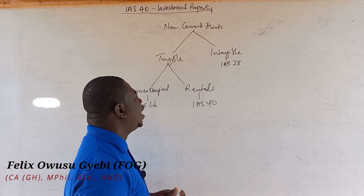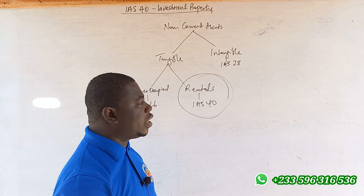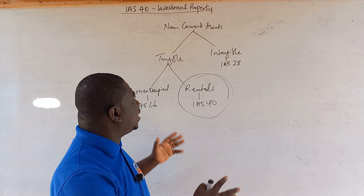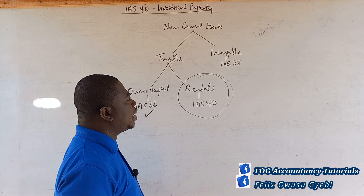What we are going to talk about today is tangible non-current assets held for the purpose of renting out or for capital appreciation. This is the tree of non-current assets as far as these three standards are concerned. We've already spoken about property, plant and equipment, and we are now coming to talk about investment property, which is IAS 40.